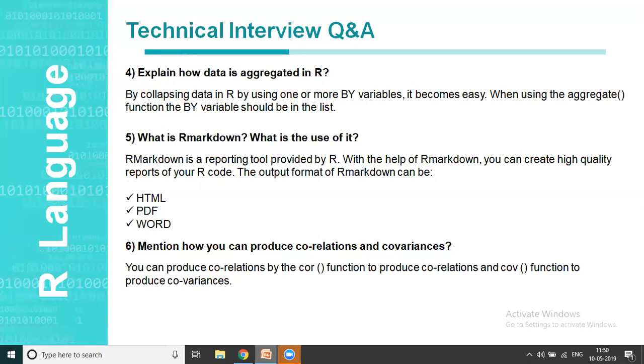The sixth one is, mention how can you produce correlations and covariances? This is the most easiest question. If you want to use correlations, it would be COR function. And if you want to use covariances, it would be COV function.